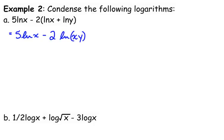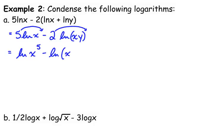Now I'm going to deal with the coefficients using my power rule. When we have coefficients, we can move those up as exponents. So we have the natural log of x to the fifth, minus the natural log of xy in parentheses squared. I put x times y in parentheses because without them, when you move that coefficient of two to become a power, you might only apply it to y — but it should be applied to both terms.